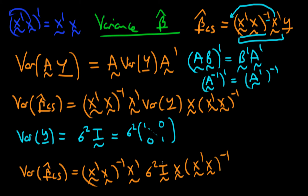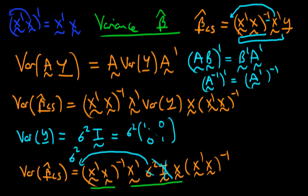The identity matrix times any matrix X is just X, so we can drop the identity matrix. We can also move sigma squared out front since it's a constant. This lets us simplify further: we have X prime X inverted times X prime times X, which means X prime X inverted times X prime X — these cancel — and we're left with the variance of beta hat least squares equal to sigma squared times X prime X to the power minus one.